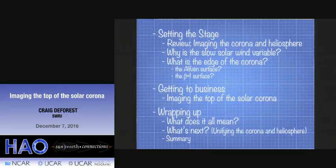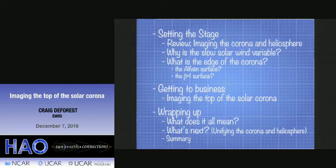Here's the roadmap. We're going to set the stage with a review of imaging the corona and heliosphere, which most of you folks have done a little bit of. Why is the slow solar wind variable? What is the edge of the corona? Why do we care about it? Then we'll get down to business and talk about actual recent work we've done on imaging the top of the corona and the edge of the heliosphere, the beginning of proper solar wind. Then in the wrap-up, we'll talk about what does it all mean, what's next, and I'll give you a little summary.